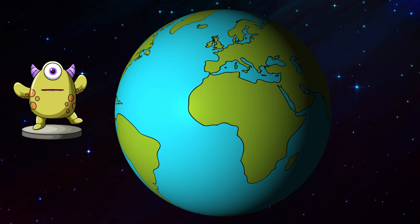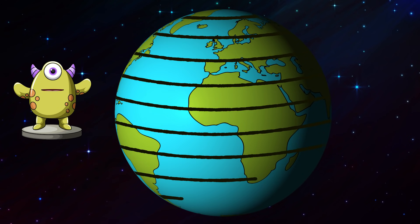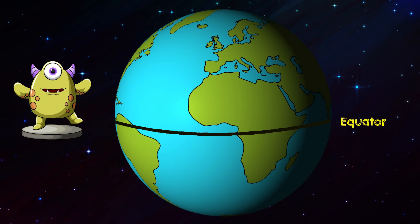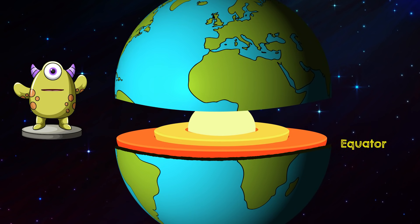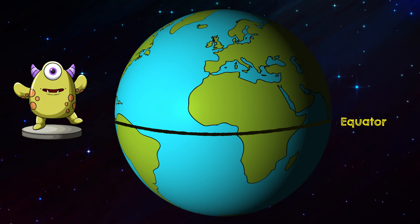Latitudes are imaginary lines that run in an east-west direction parallel to each other. The longest latitude is called the equator. It runs around the center of the earth and divides the earth into the northern hemisphere and the southern hemisphere. Latitudes are measured in degrees and the equator is marked at zero degrees.